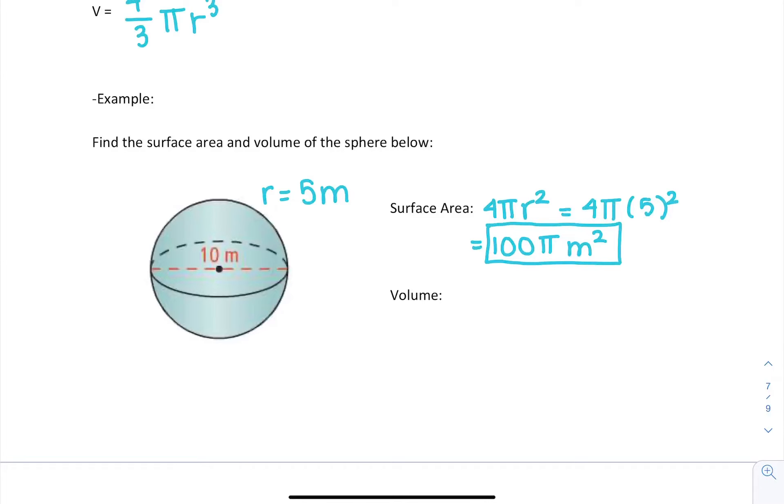Now for volume, our volume is 4/3πr³, so 4/3π times 5³, which will be exactly 500/3π meters cubed, which is 166.6 repeating π meters cubed, or if you want to plug that in, that's approximately 524 meters cubed.